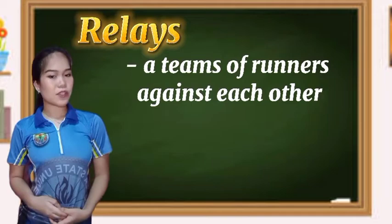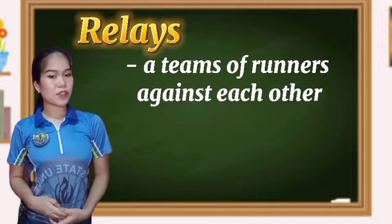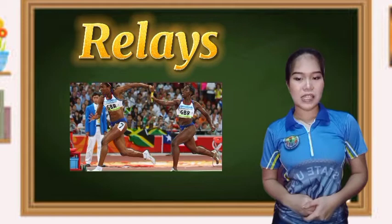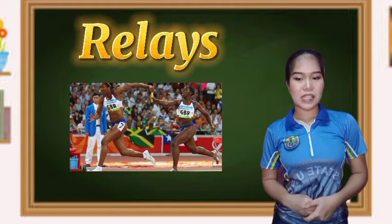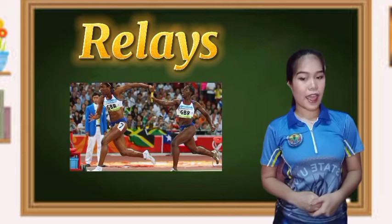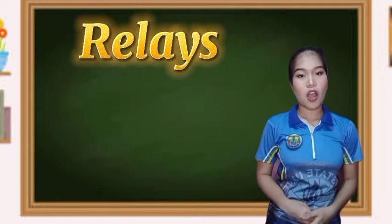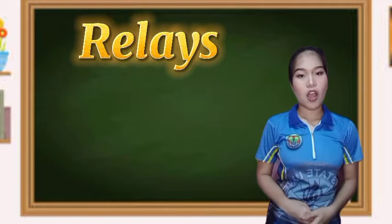We also have relays. Relay races are where teams of runners compete against each other. There are typically four runners and four legs to the race. The first runner starts with the baton and runs the first leg, handing off to the second runner. The hand-off must typically take place within a given area of the track. The second then hands off to the third and the third to the fourth. The fourth runner, also called the anchor, runs the final leg to the finish line. Common relay races are the 4x100-meter and the 4x400-meter.